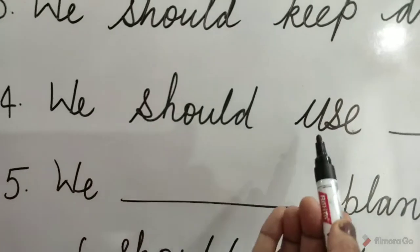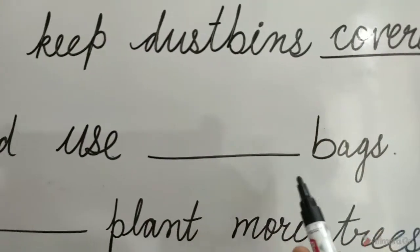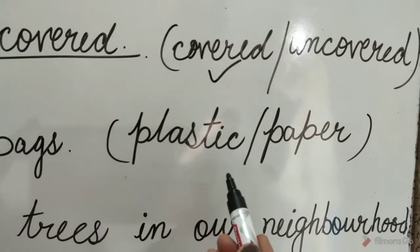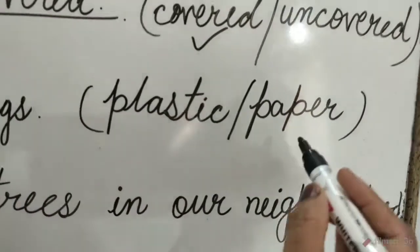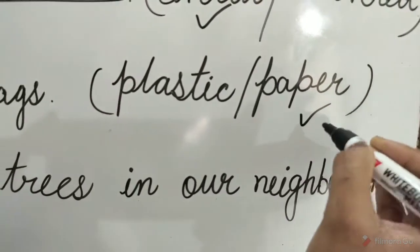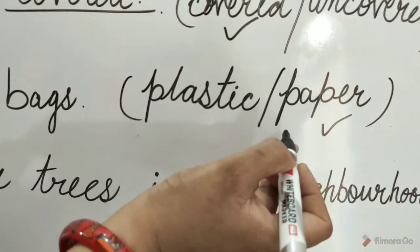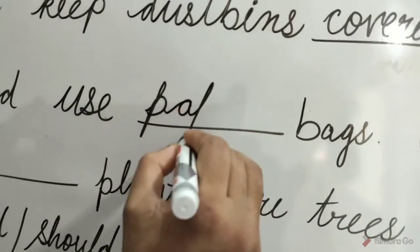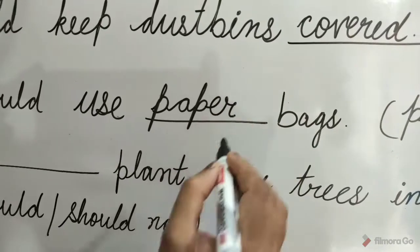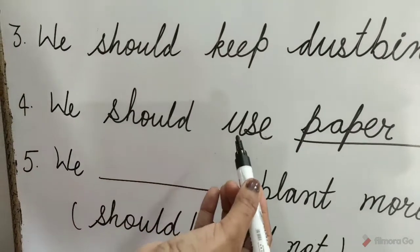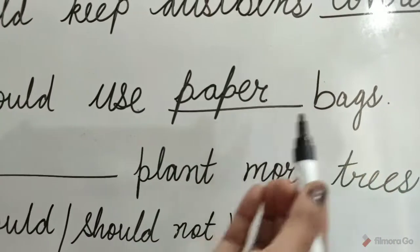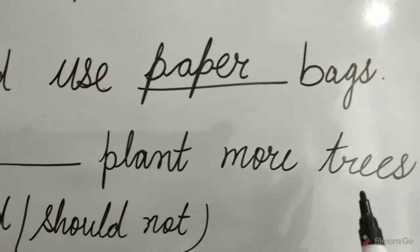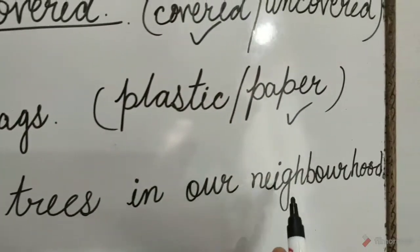Question 4: We should use dash bags. The options are 'plastic' or 'paper'. The 'paper' option is correct. So tick on 'paper' and write here: paper. We should use paper bags. Question 5: We should plant more trees in our neighborhood.